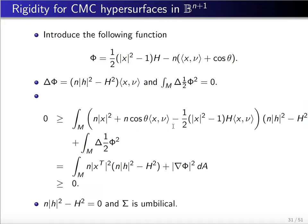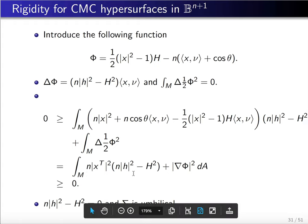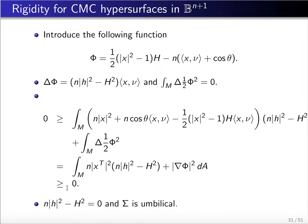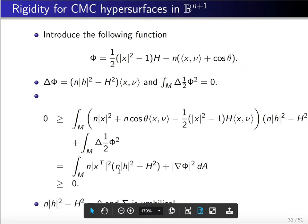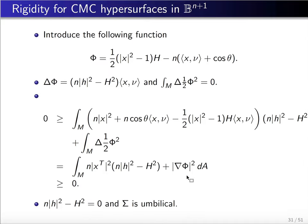The two integrands reduce to n times the norm squared of the tangential part of x, times (nH₁² minus mean curvature squared), plus |gradient Phi|². This quantity is non-negative. Then all previous inequalities become equalities. We conclude that nH₁² minus mean curvature squared equals zero, and gradient Phi equals zero. From this we can easily conclude that the hypersurface is umbilical. This completes the proof.